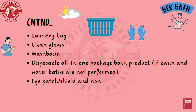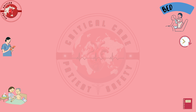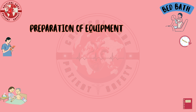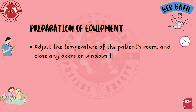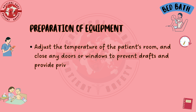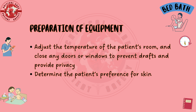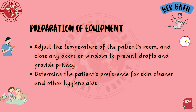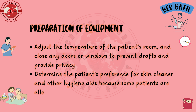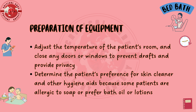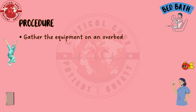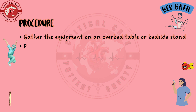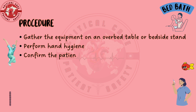Additional equipment includes a laundry bag, clean gloves, wash basin, and a disposable all-in-one package bath product if basin and water baths are not performed. An eye patch or shield and non-allergenic tape are needed for an unconscious patient. Adjust the temperature of the patient's room and close any doors or windows to prevent drafts and provide privacy. Determine the patient's preference for skin cleaner and other hygiene aids, as some patients are allergic to soap or prefer bath oil or lotions.